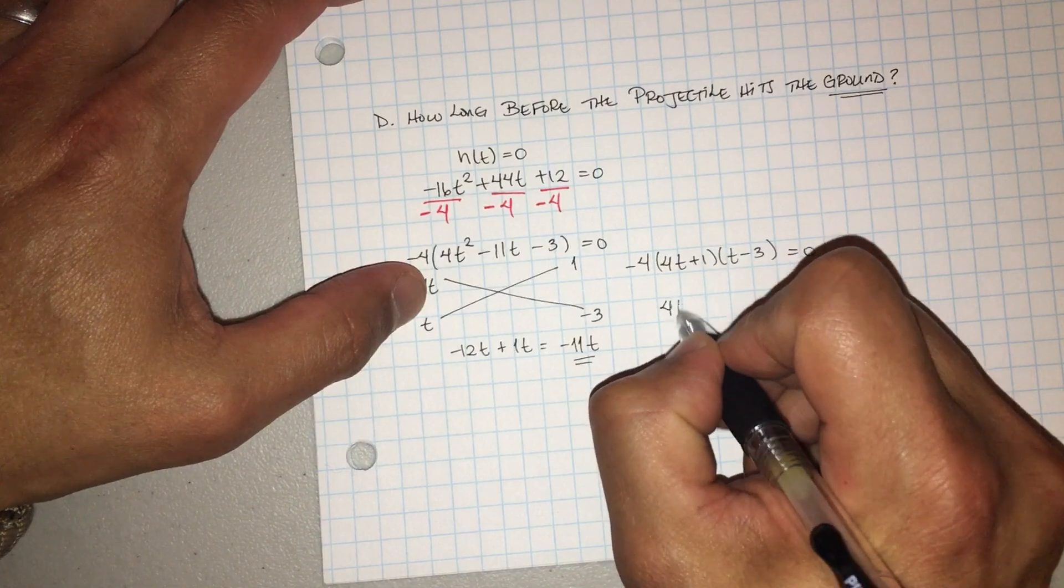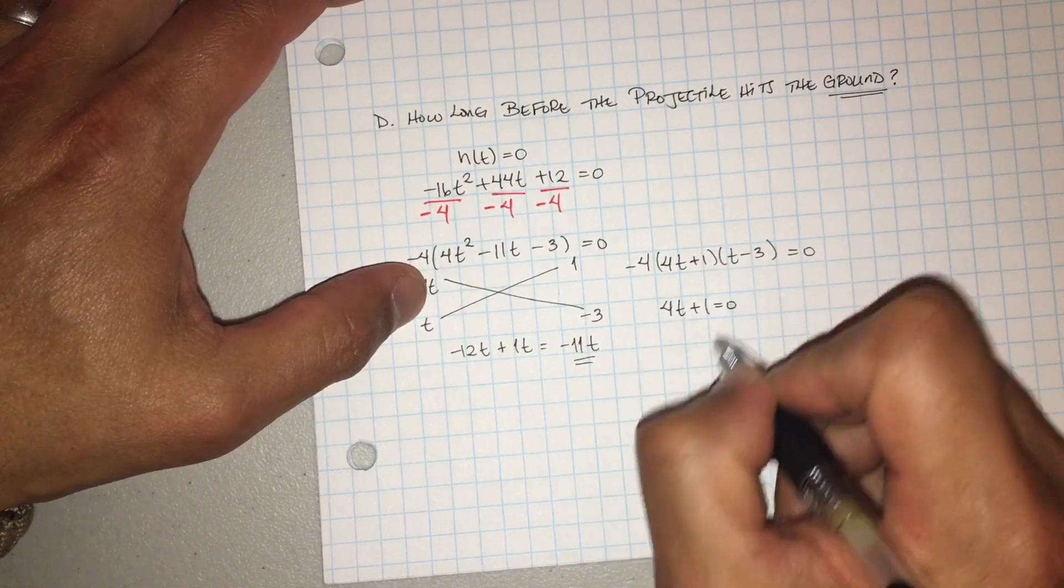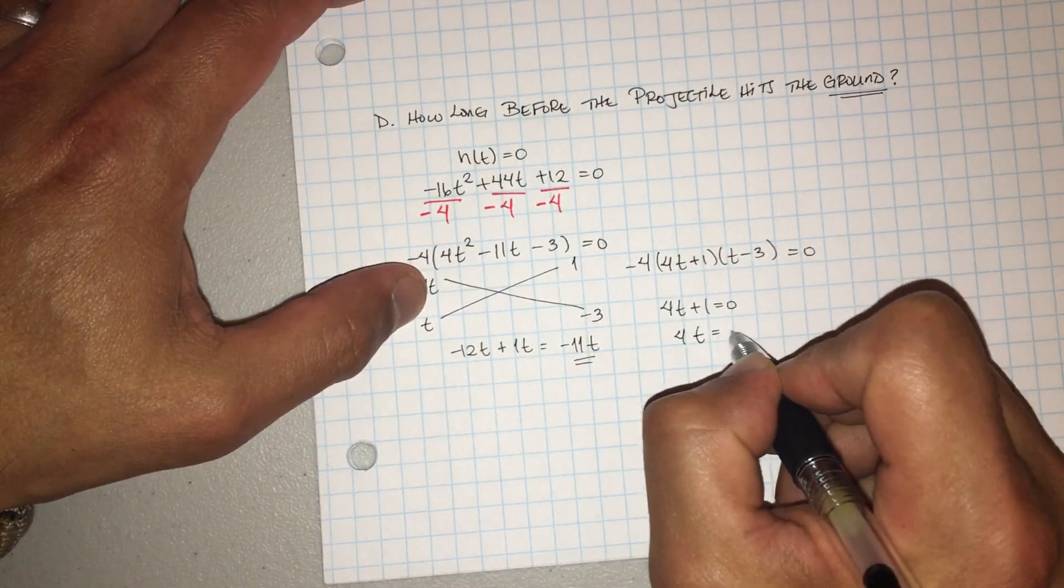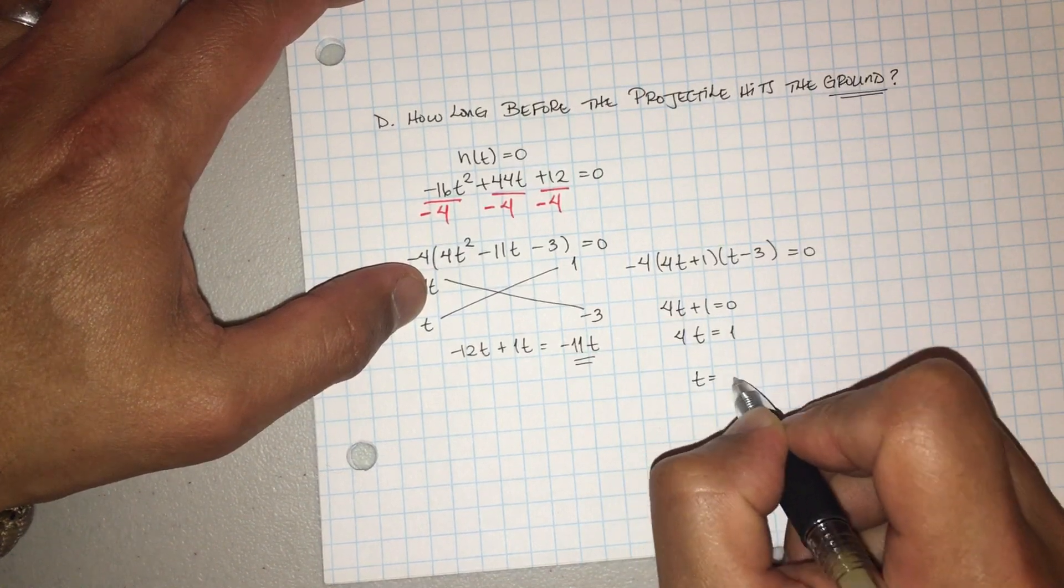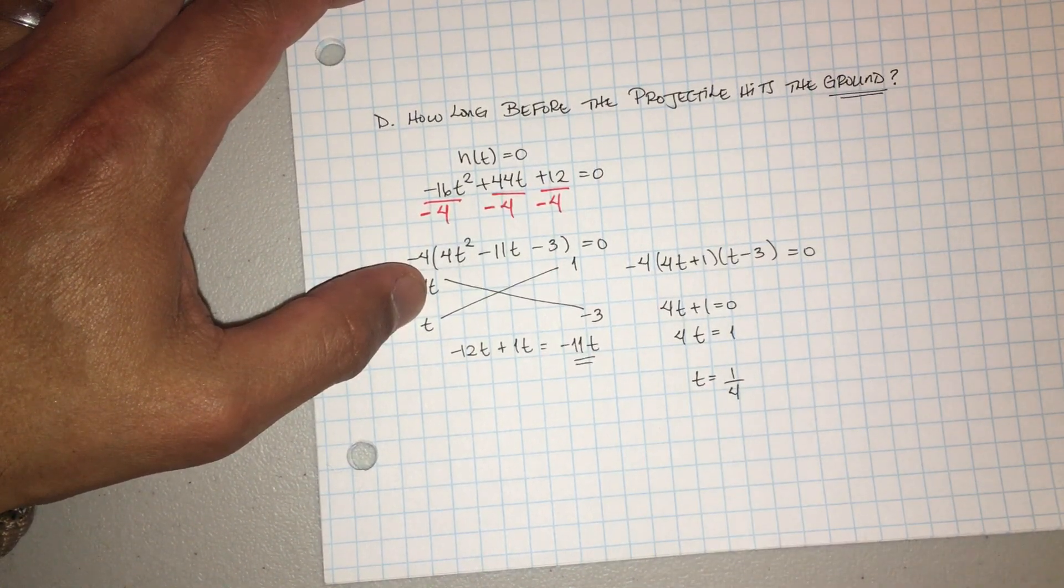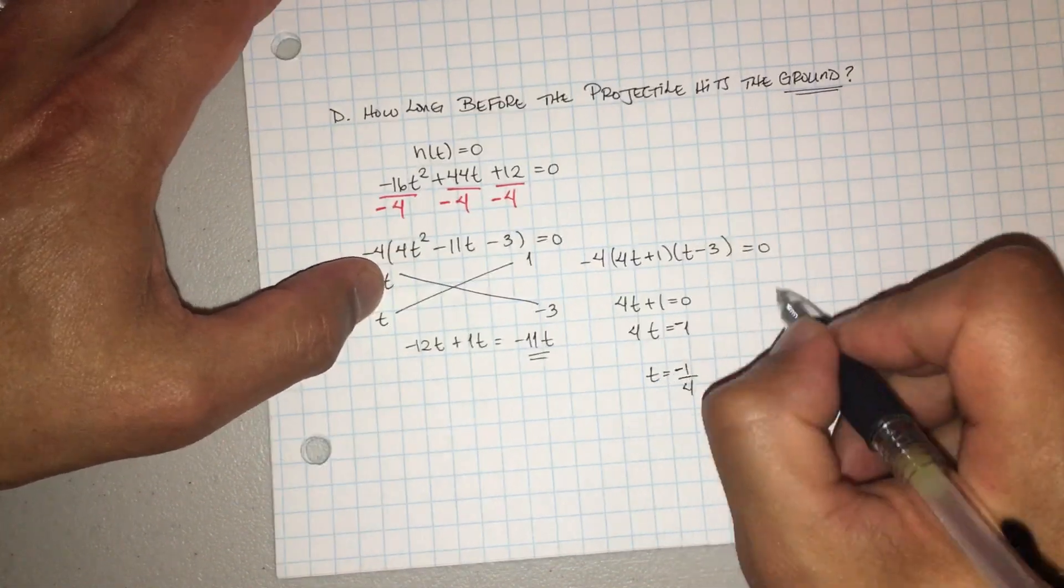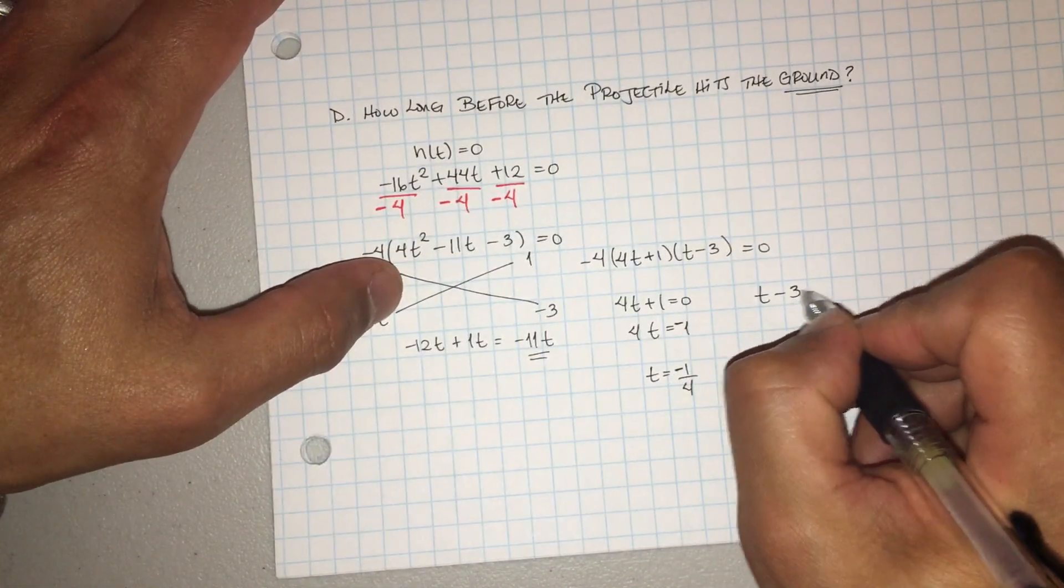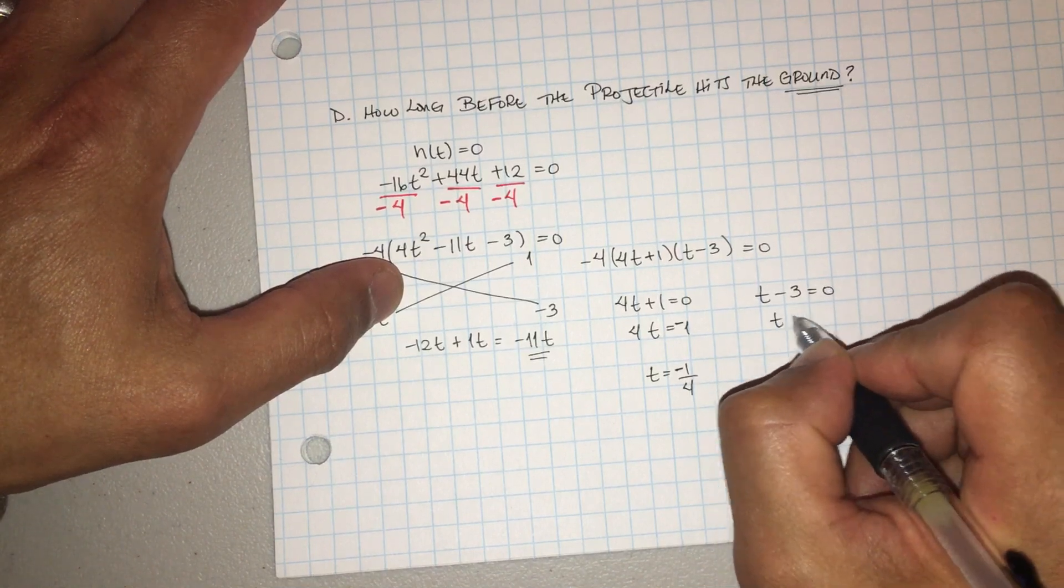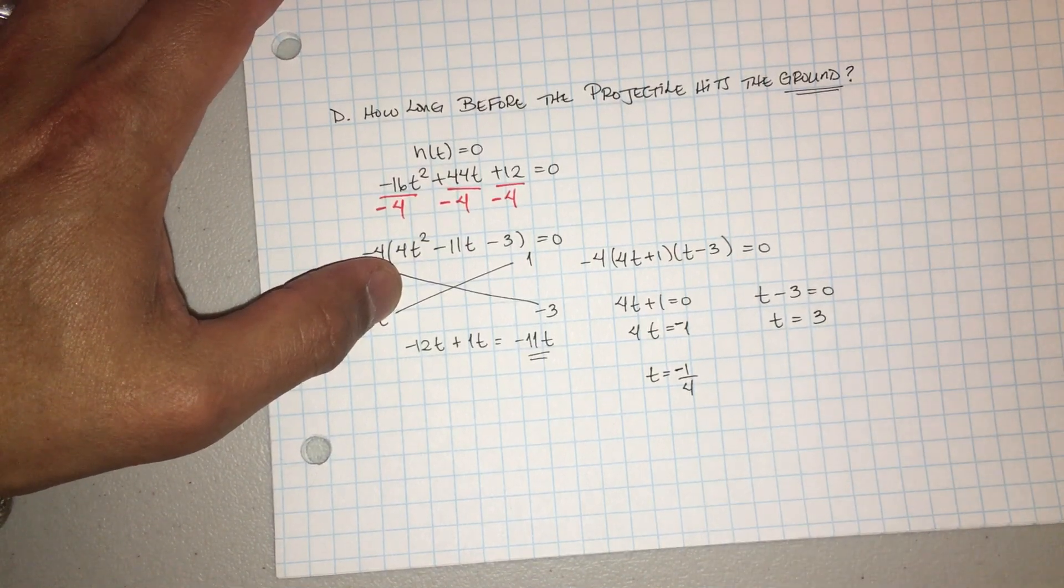Okay, so now we're going to go ahead and set it equal to zero. So four t is going to equal to one, and we divide by four, t is equal to one fourth. Oops, sorry, negative one fourth, negativo un cuarto. Okay, and then on this side we're going to do the same thing. T minus three is equal to zero, so t is going to equal to positive three.